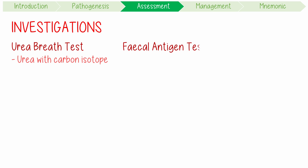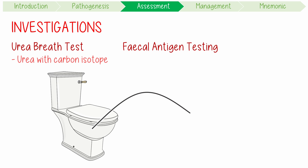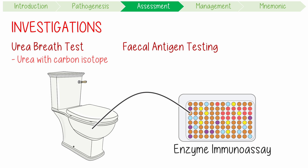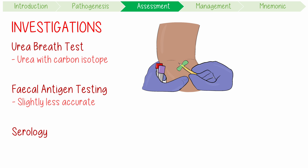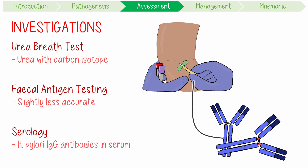Second, fecal antigen testing: a stool sample can be analysed using an enzyme immunoassay. This is more convenient but slightly less accurate. Third, serology, which detects H. pylori IgG antibodies in the serum. Given this stays positive for years after successful eradication, it can lead to false positive results.